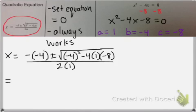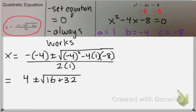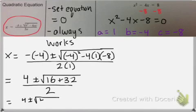So I'm going to start by simplifying negative negative 4, that becomes positive 4. Negative 4 squared is 16. And then I have negative 4 times negative 8, which is positive 32, all over 2.